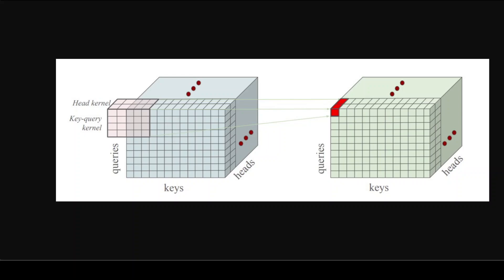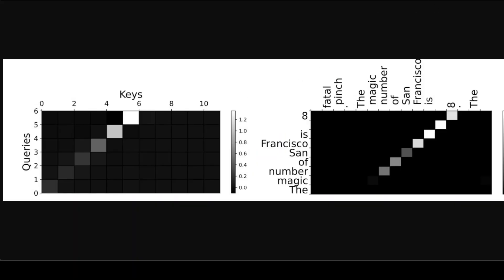This simple modification allows attention weights to become richer, as each query-key pair can now incorporate information from adjacent token vectors and even from other heads, greatly enhancing precision in finding relevant context. In practice, this means the model can perform better especially in tasks where pinpointing exact context from multiple hints is crucial, such as searching for complex phrases or concepts buried deep in longer contexts.